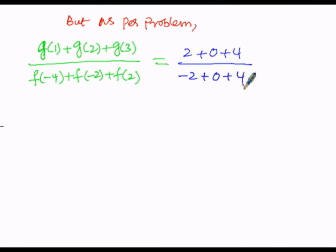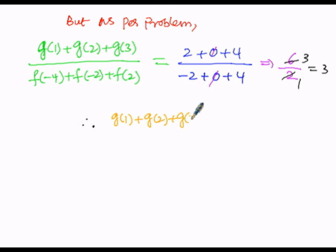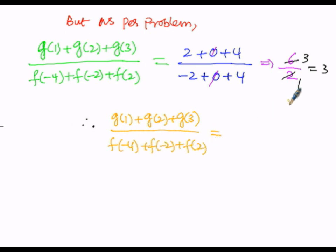Numerator: 0 cancels, 2 plus 4 is 6. Denominator: minus 2 plus 4; plus of minus is minus, 4 minus 2 is 2, and 4 is greater so sign is positive, giving 2. So we have 6 over 2: 2 cancels giving 3 over 1, which equals 3. Therefore, g(1) plus g(2) plus g(3), divided by f(-4) plus f(-2) plus f(2), equals 3.